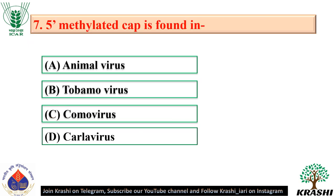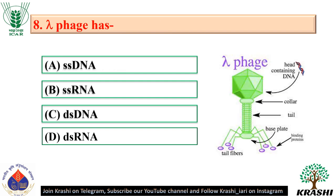Question number 7: 5-methylated cap is found in animal virus. Question number 8: Lambda phage has double-stranded DNA.